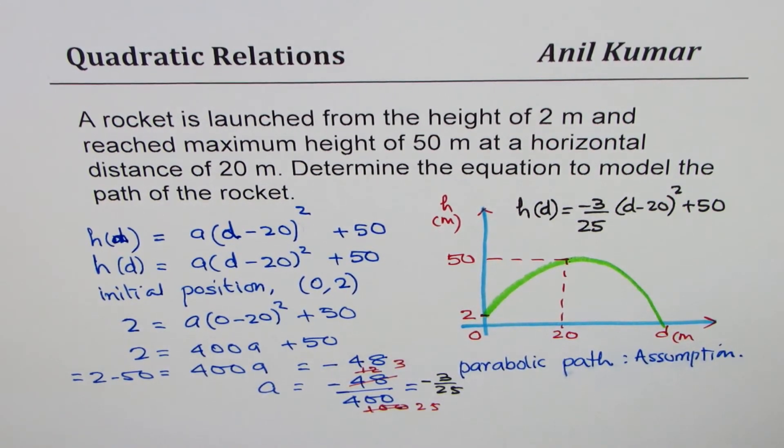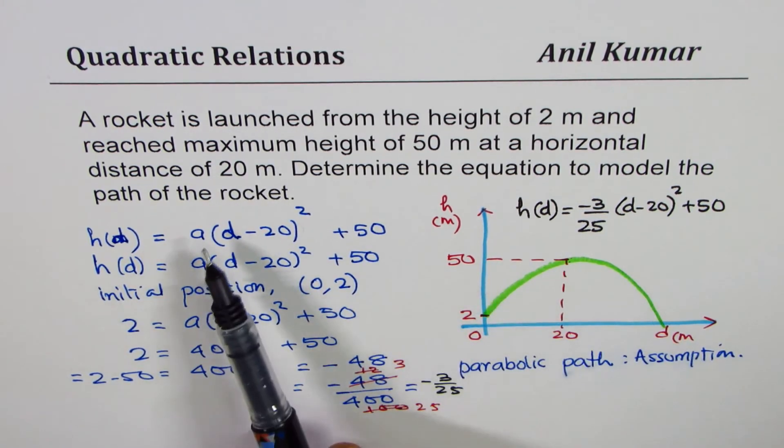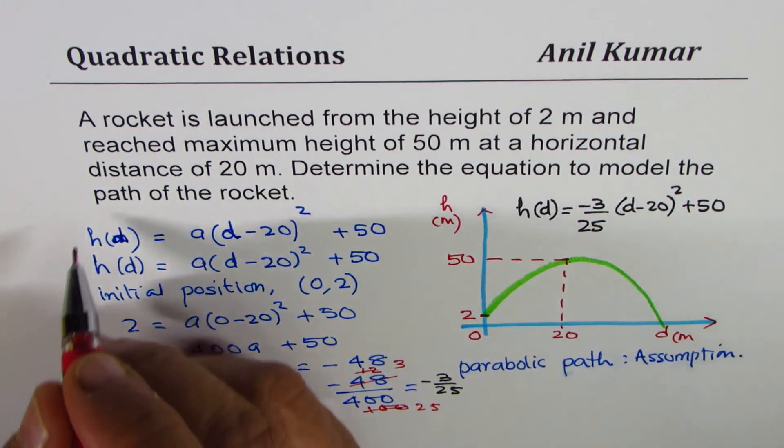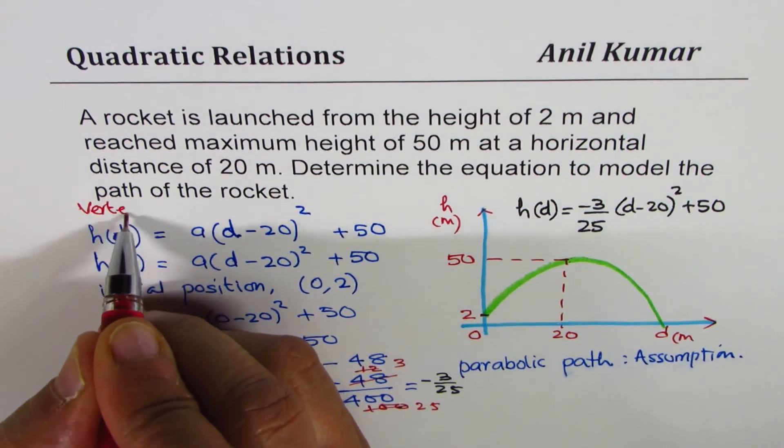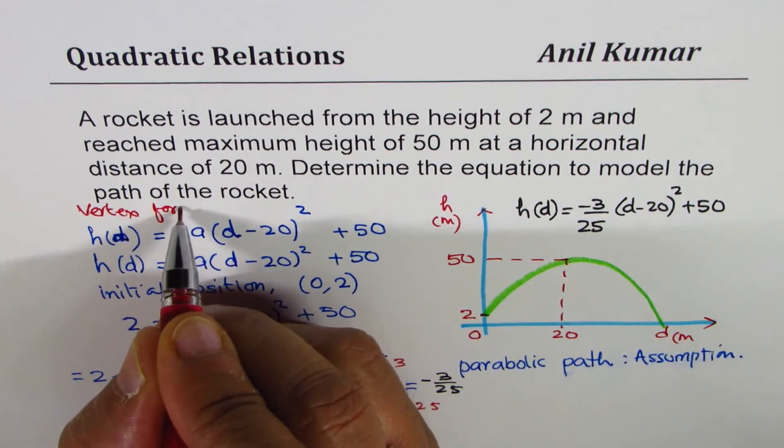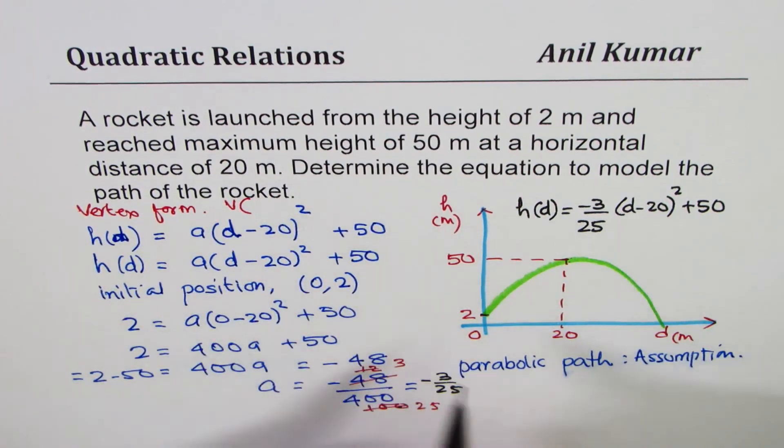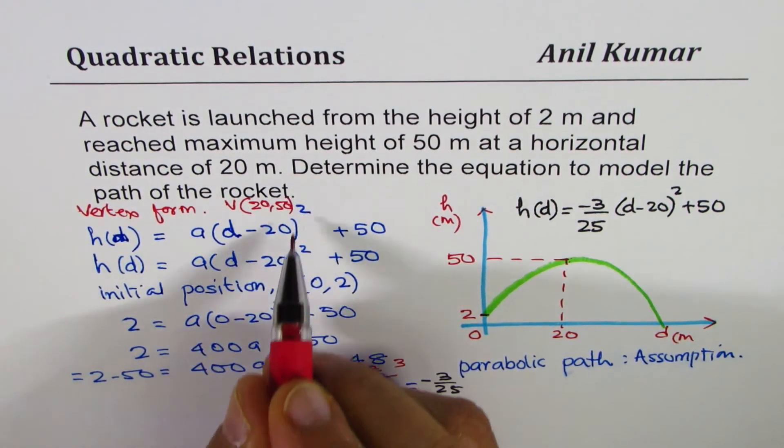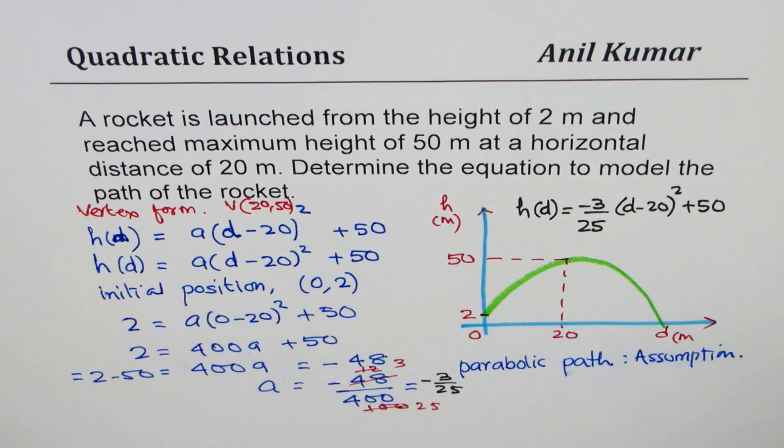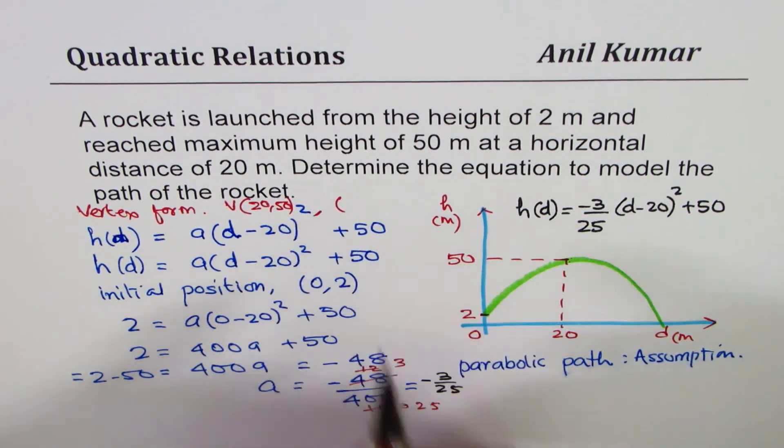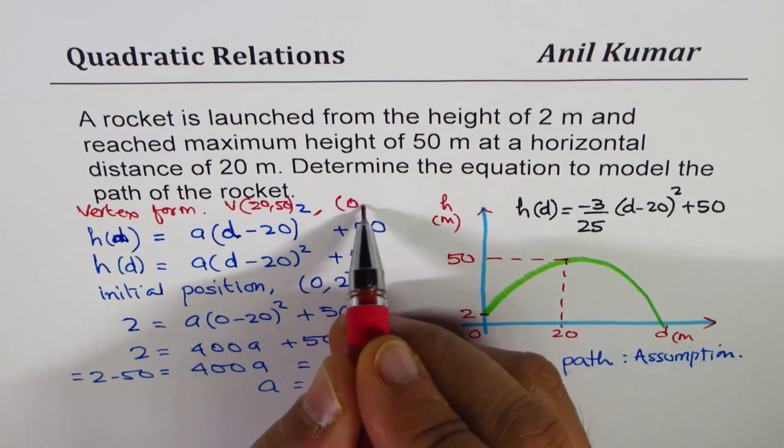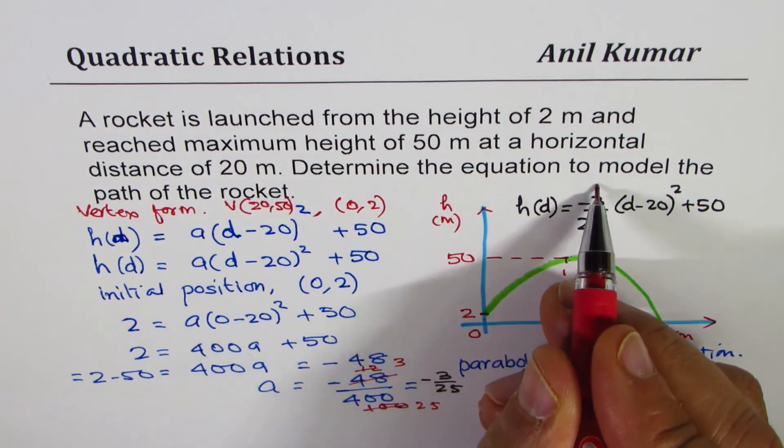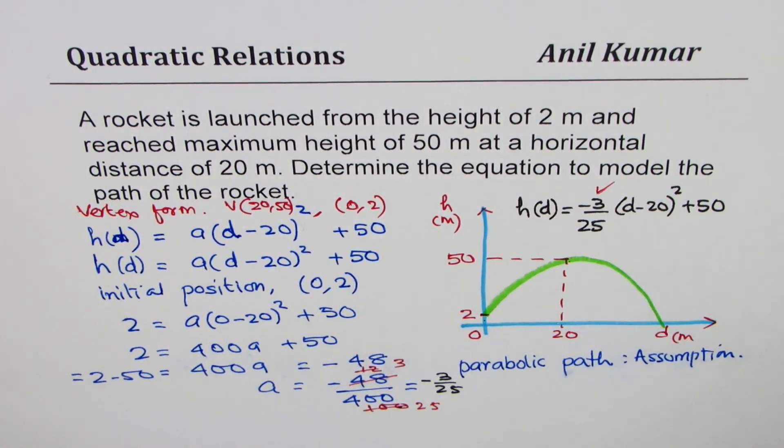I hope you understand and appreciate the steps. The idea is, when we are given a maximum, start with the vertex form. We started with the vertex form since we knew that the vertex is at 20, 50. And that helped us to find the solution, and we also used the point 0, 2 to get the value of A. I hope that helps how to solve such questions.